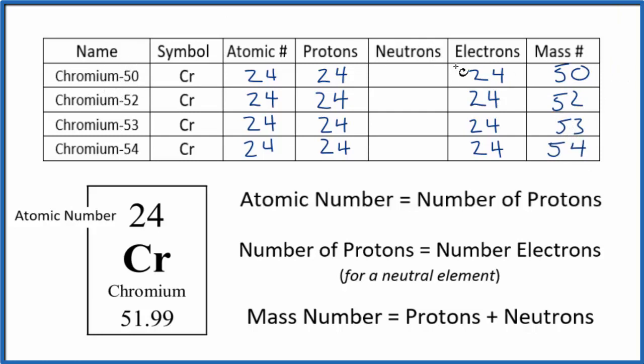So to find the number of neutrons, we know the mass number is protons plus neutrons. So we can just do some math. 24 plus something gives us 50. 24 plus 26, that gives us 50. Then 24 plus 28 would give us 52. And so on.